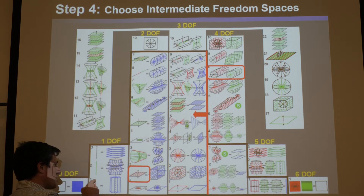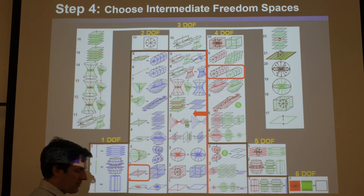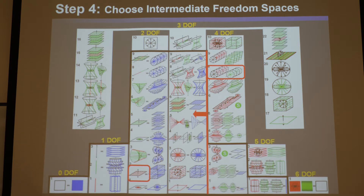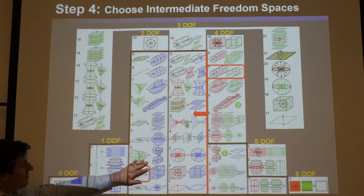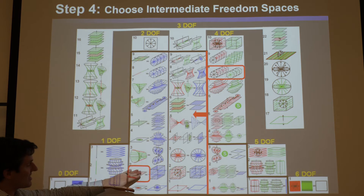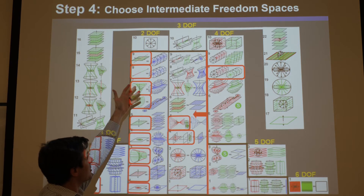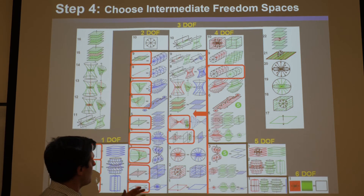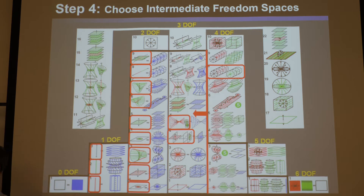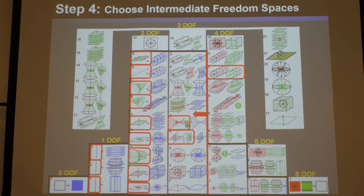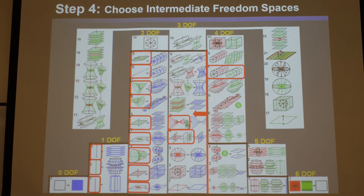Just because it's in the parallel pyramid doesn't mean you have to synthesize a parallel system — you can synthesize a serial system. Serial and hybrid systems can achieve all freedom spaces in the FACT library; it's parallel systems that can only achieve those in the parallel pyramid. Why pick super complicated options? If you've got a nice, beautiful, simple one, strongly recommend you pick it. The simpler the design, the better. Only pick complicated ones if there's no other way.